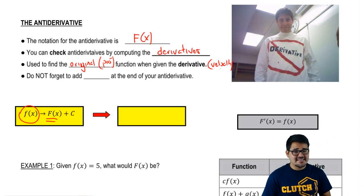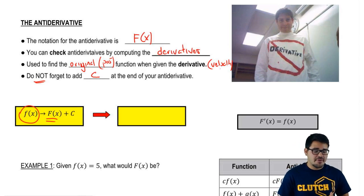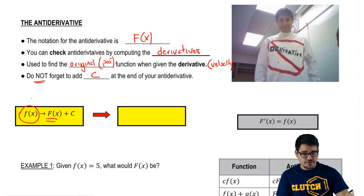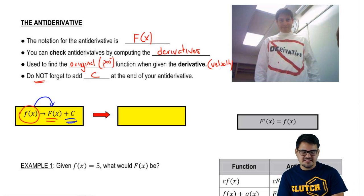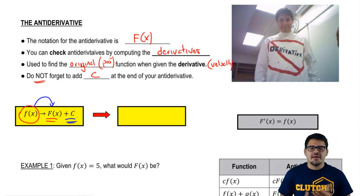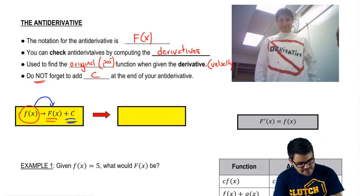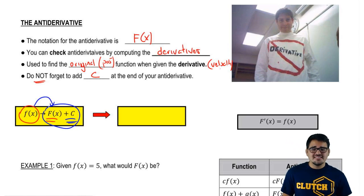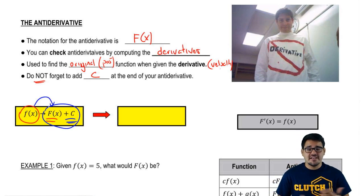One last important thing when computing antiderivatives: do not forget to add a plus C, which is a random constant, at the end of your antiderivative. The reason is that when you go from the original function to the antiderivative, when you later derive a constant, it becomes 0. So we always need to account for this random constant that could derive to 0.